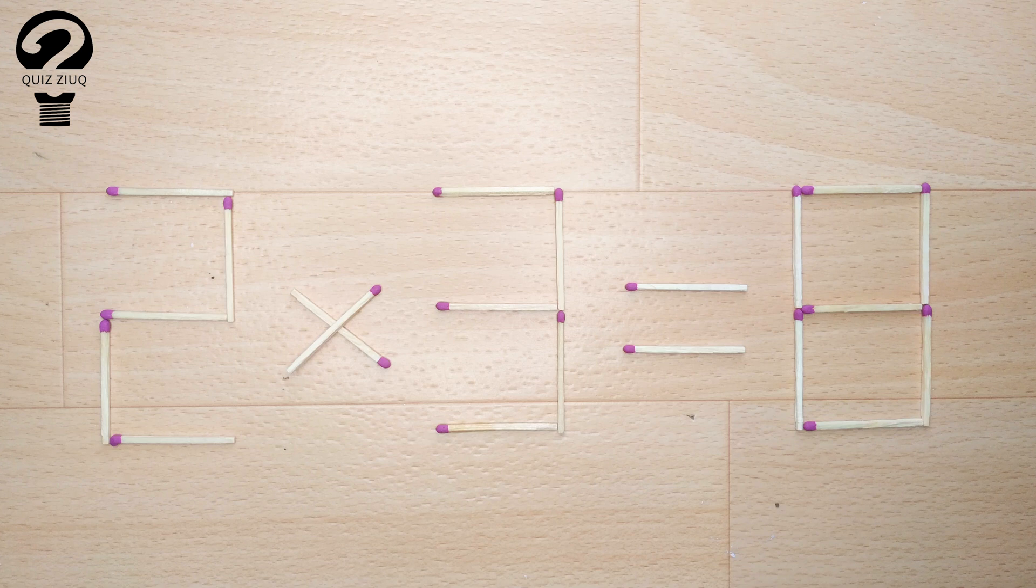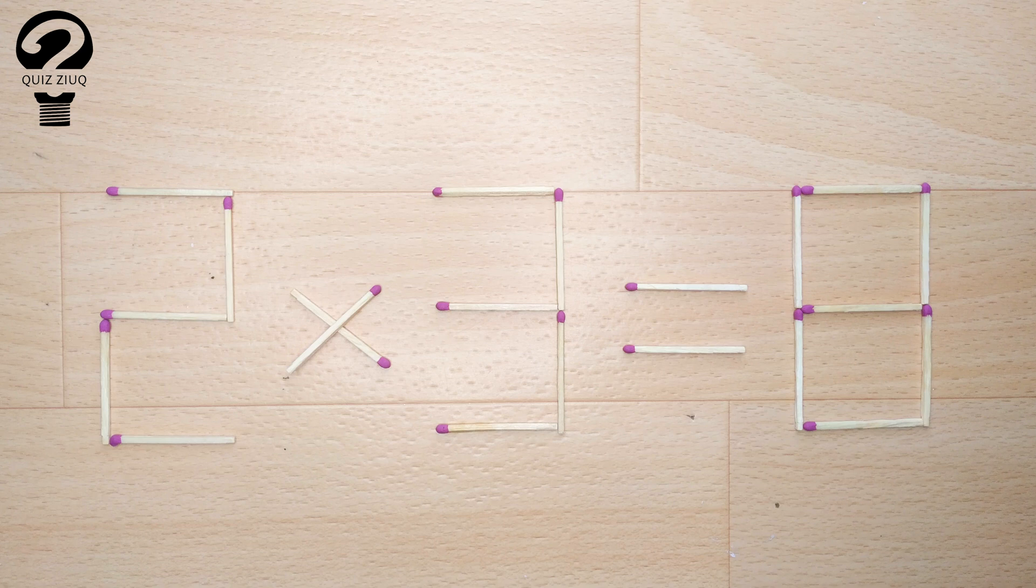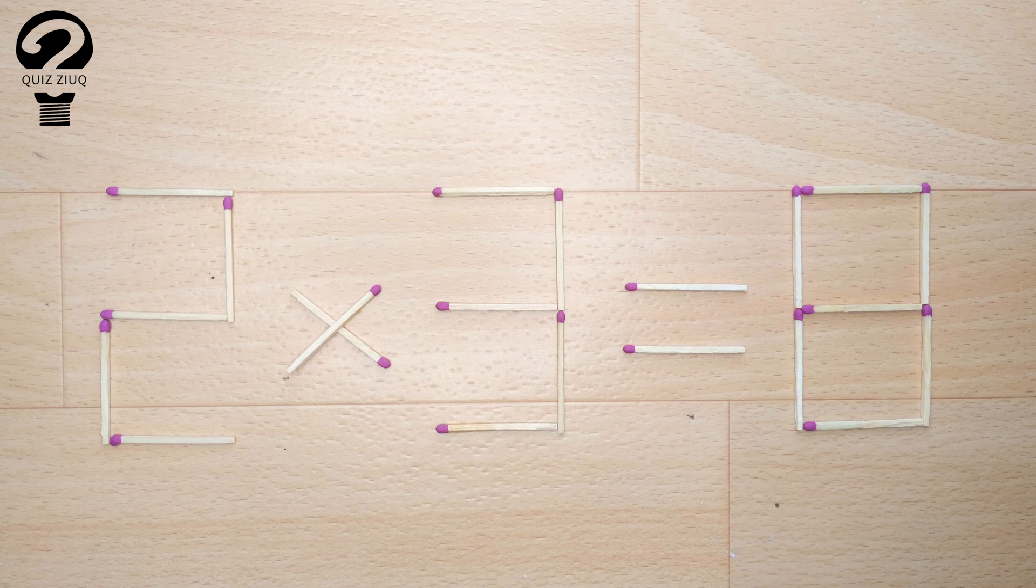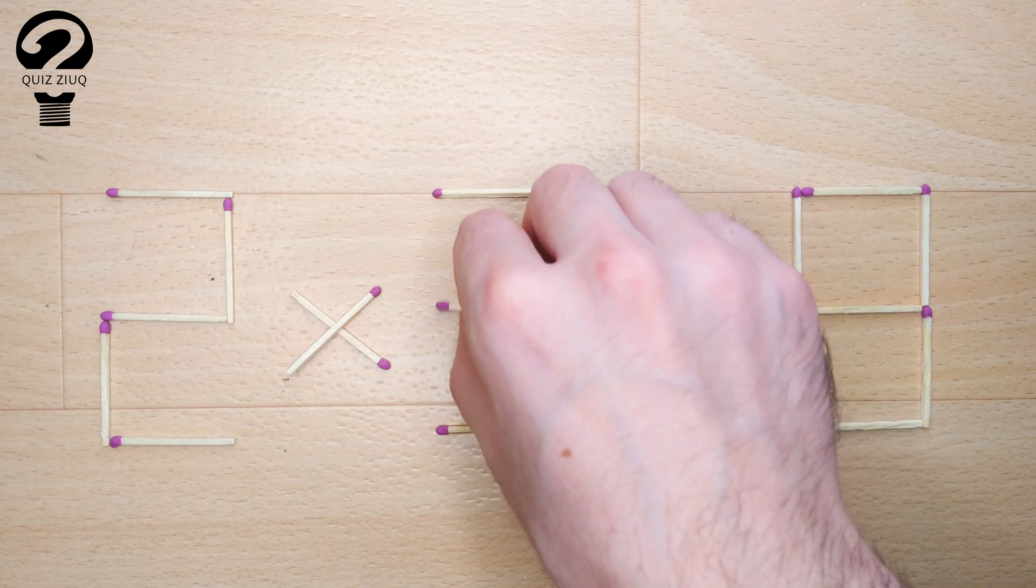We need to move two matches to make our equation correct. How is this puzzle solved? For this, we just need to move two matches.